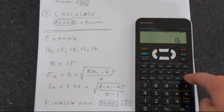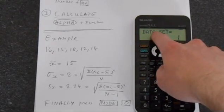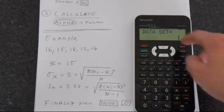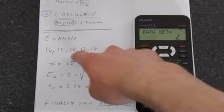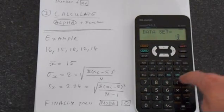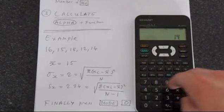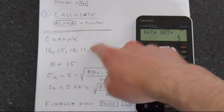So we want 16, we want to enter this so press M plus. That saves it. And this data set just counts the number of things that you've inputted. So 15, M plus, now 18, 12, and 14. So we've got five pieces of data.